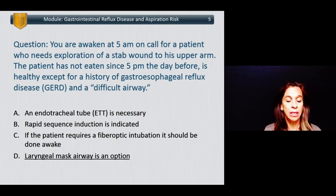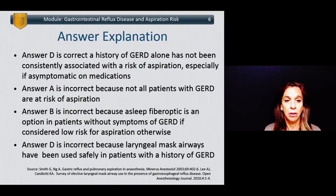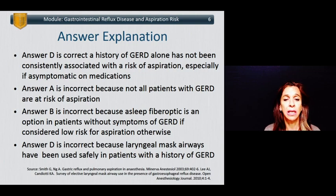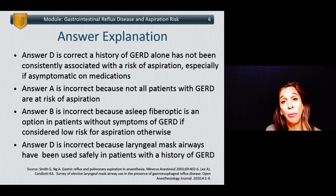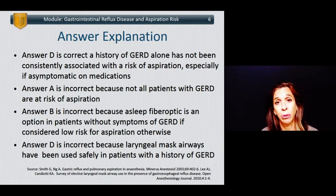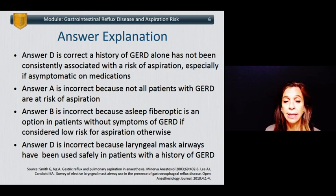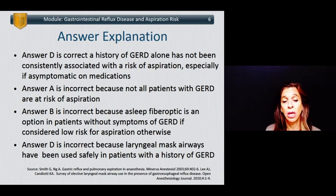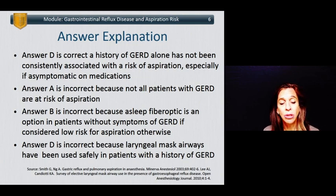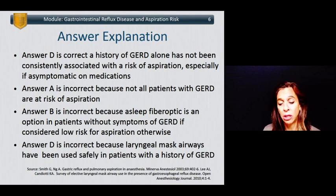The answer is D: laryngeal mask airway is an option. Answer D is correct because a history of GERD alone has not been consistently associated with a risk of aspiration, especially if asymptomatic on medications. Answer A is incorrect because not all patients with GERD are at risk of aspiration. Answer B is incorrect because a sleep fiber optic is an option in patients without symptoms of GERD if they are considered low risk for aspiration. And answer D — laryngeal mask airways have been used safely in patients with a history of GERD.